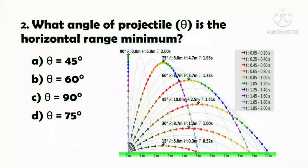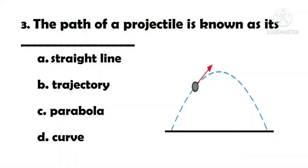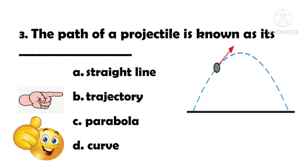Correct. Number 2: What angle of projectile gives the horizontal range minimum? A. When angle is 45 degrees. The answer is C. Correct. Number 3: The path of a projectile is known as its A. Straight line. B. Trajectory. C. Parabola. D. Curve. The answer is B. Correct.